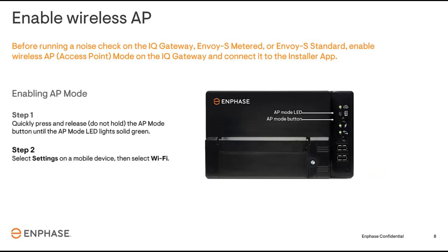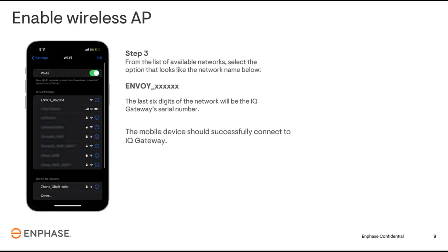To run the noise detection tool, the Installer app must connect to the gateway using AP mode. Locate the AP mode button on the front of the gateway. Quickly press and release the button — the AP mode LED will turn green. Next, navigate to the Wi-Fi settings on your mobile device. Look at the list of available Wi-Fi networks and select the network that looks similar to 'Envoy_' followed by the last six digits of the device's serial number. Once selected, the mobile device should connect to the gateway.